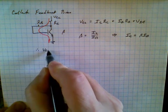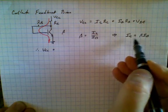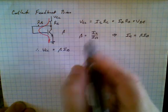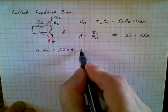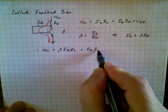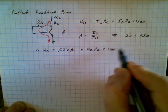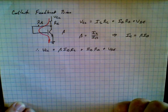Therefore, Vcc is equal to, making this substitution, beta Ib times Rc plus Ib Rb plus Vbe. That's all equal to Vcc, the supply voltage.